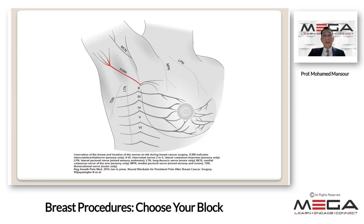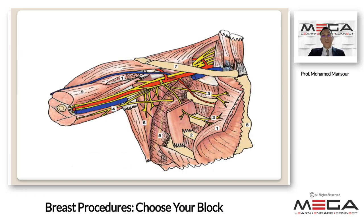The muscles under the breast also have a different nerve supply. The pectoral muscles underlying the breast have a cervical segmental supply of C5 to T1 through the pectoral nerves from the brachial plexus in the infraclavicular zone, mostly from C7 and C8.